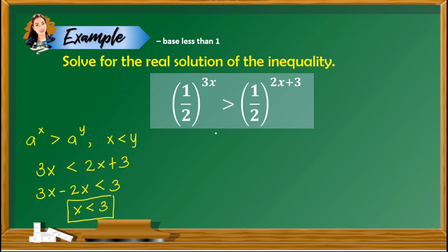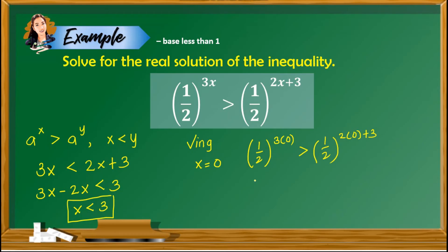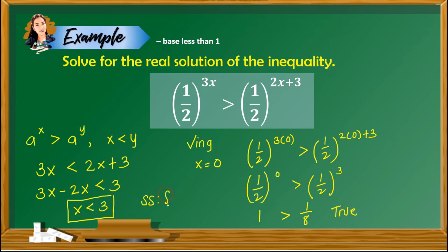To check, let x equal 0, which is less than 3. Substituting into the inequality: 1 half raised to 3 times 0 is greater than 1 half raised to 2 times 0 plus 3. This gives 1 half raised to 0 greater than 1 half raised to 3. Any number raised to 0 is 1, so 1 is greater than 1 over 8 — a true statement. Therefore, the solution set contains all values of x less than 3.